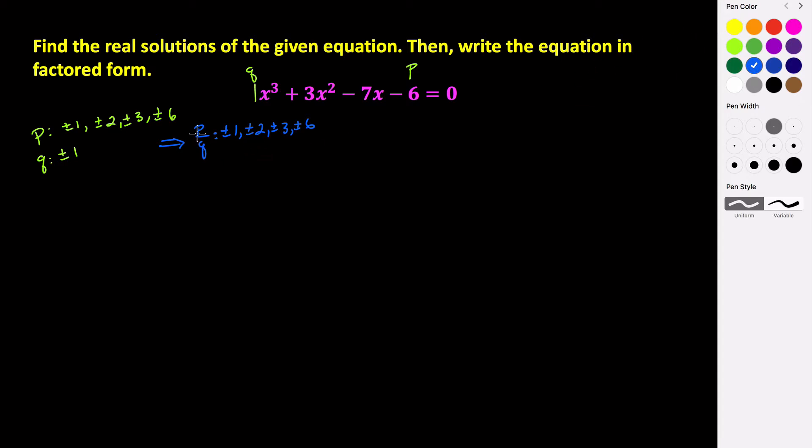So to figure out which of these potential rational zeros are in fact our zeros, you could go through and use synthetic division to solve this. You just use synthetic division going through your different zeros and then figure out which ones work.